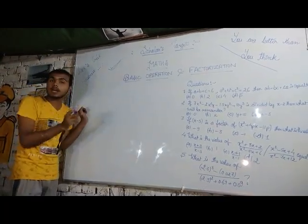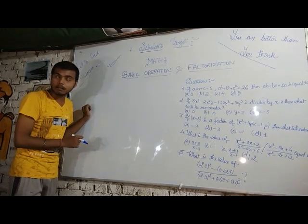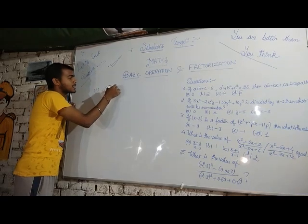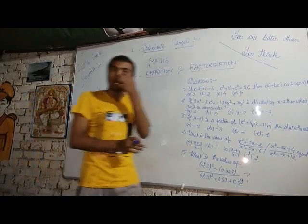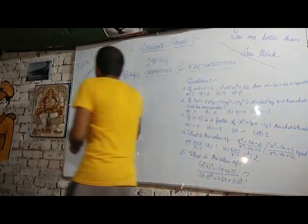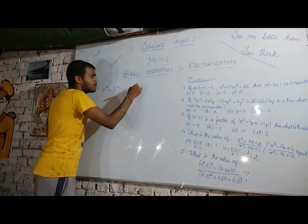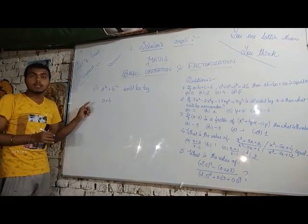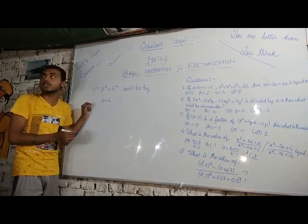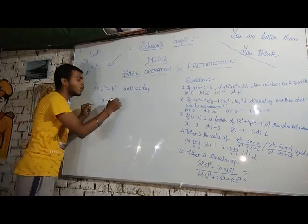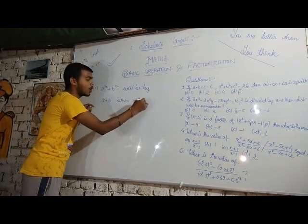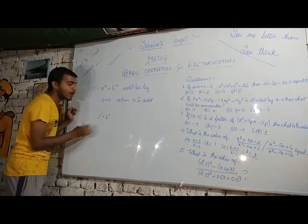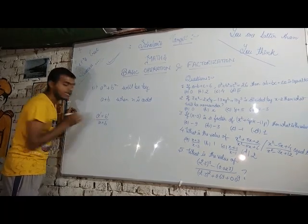Remember there are four important formulas which we use for divisibility. First: a raised to power n plus b raised to power n will be divisible by (a + b), but remember there is a special condition — this divisibility holds when n is odd. For example, a¹ + b¹ means a + b is divisible by (a + b).